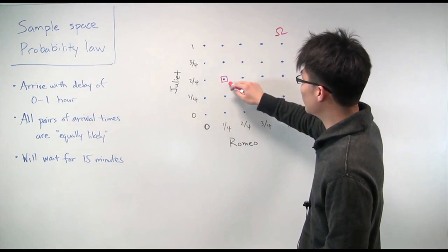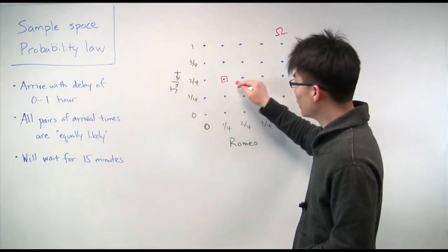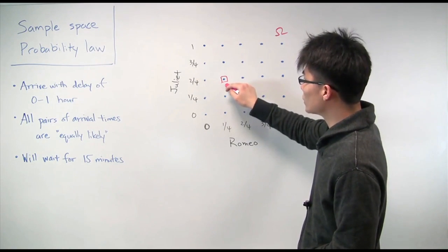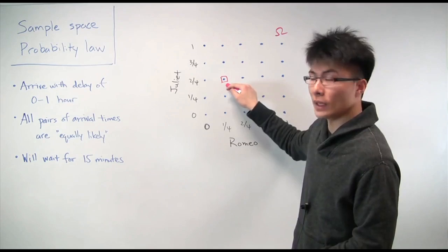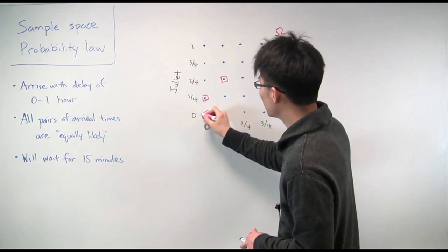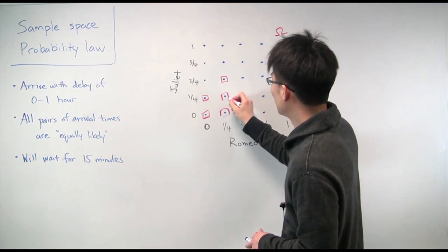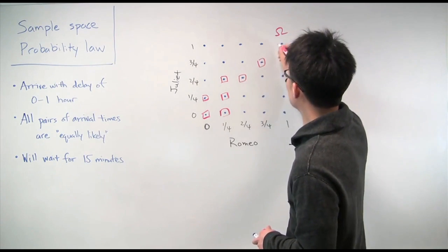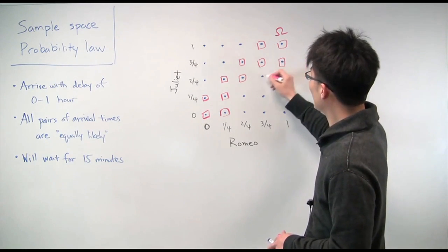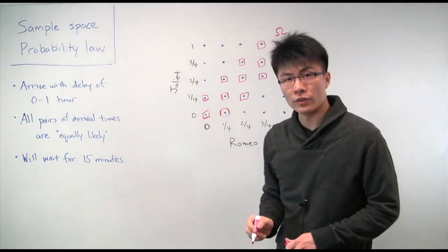Let's start with this one that I picked out. If Romeo arrives 15 minutes late and Juliet arrives 30 minutes late, then they will arrive within 15 minutes of each other. So this outcome does result in the two of them meeting. And so we can actually highlight all of these. And it turns out that these outcomes that I'm highlighting